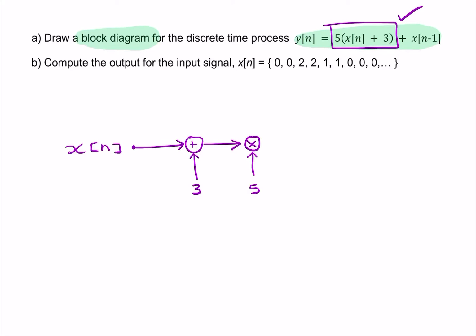Now I want to add a delayed version of x. So this is the x of n minus 1. This is my addition, that's the output for the addition, that's my y of n. The input to the addition is a delayed version of x of n. So we need to delay x. We simply feed the input into a delay block, and that will give me x of n minus 1.